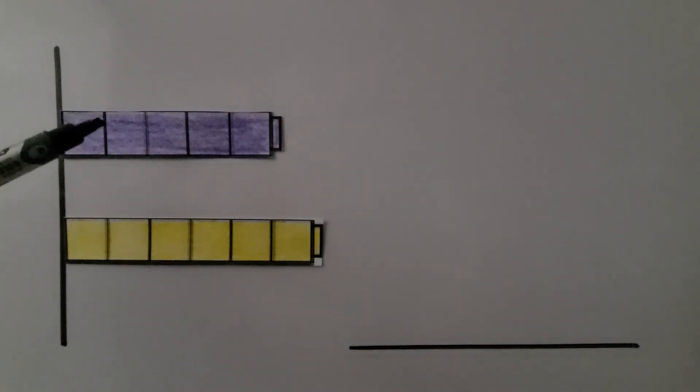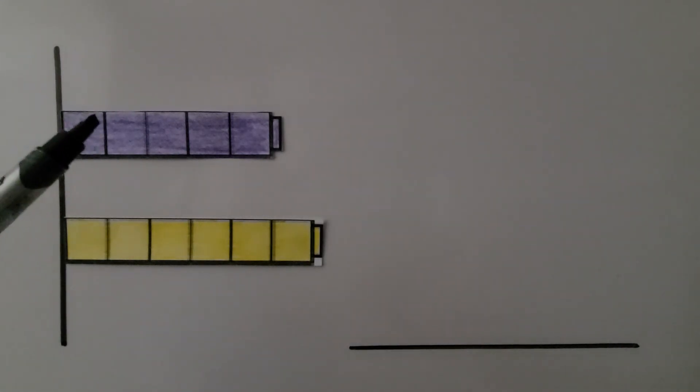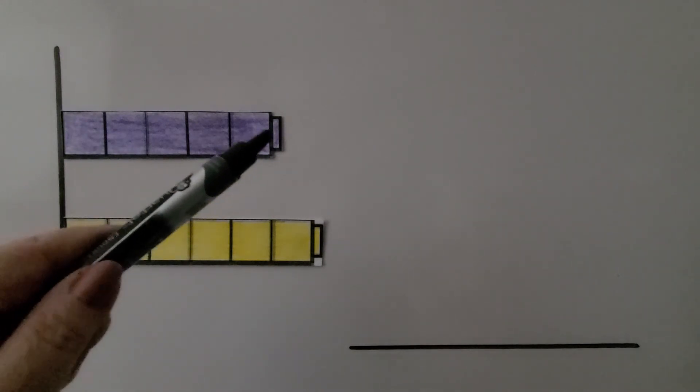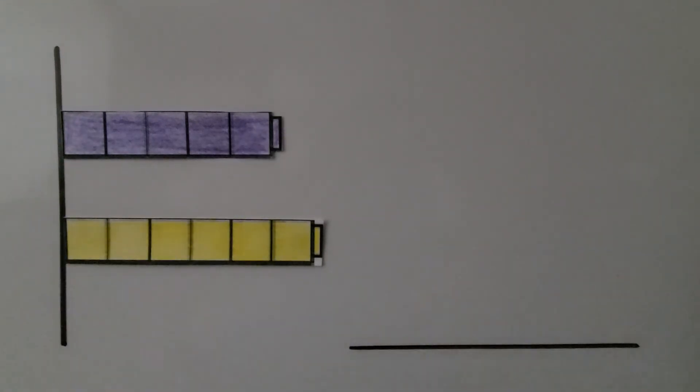Here we have a purple cube train and a yellow cube train. Which cube train is shorter? Is the purple one shorter, or is the yellow one shorter? If you said the purple one, you're right. It doesn't stick out as far as the yellow cube train, so it's shorter.